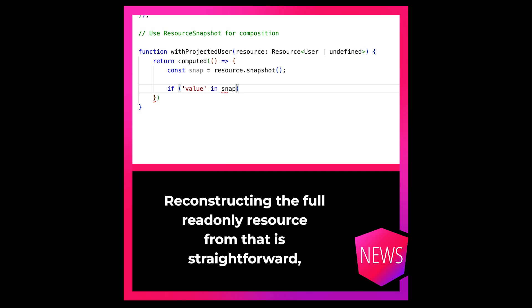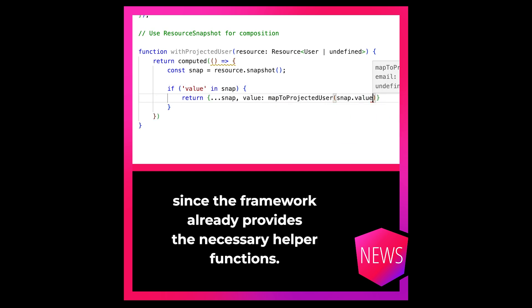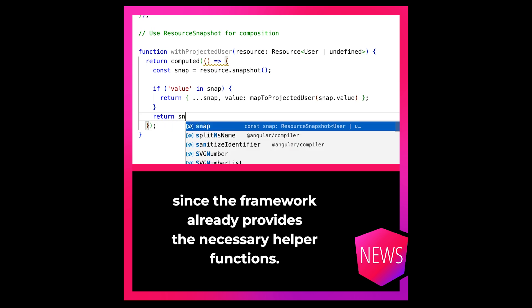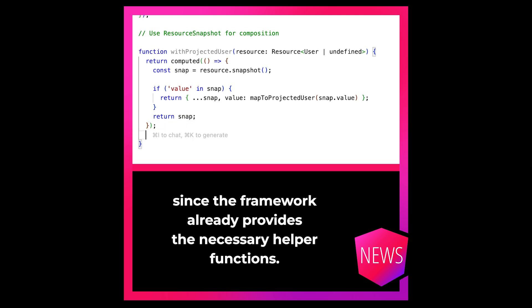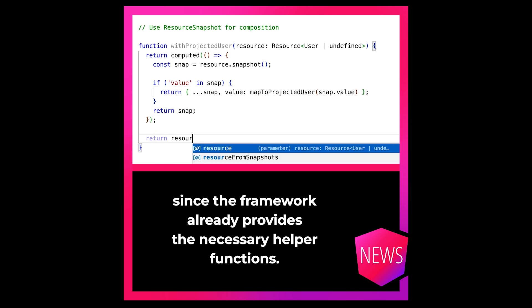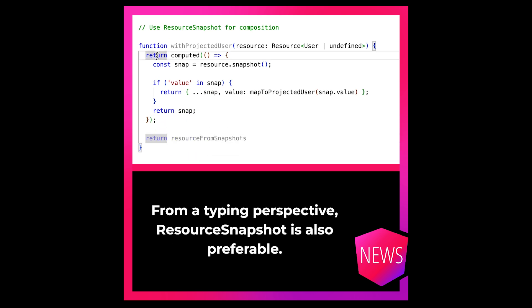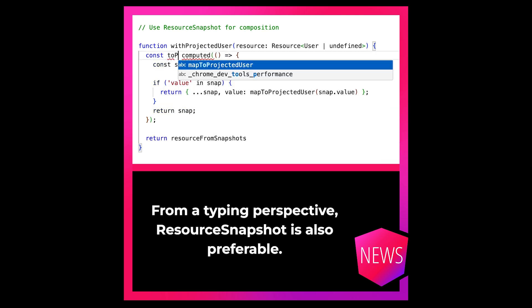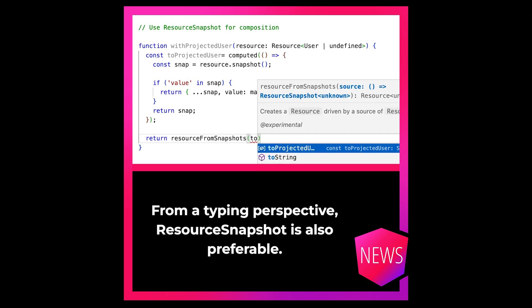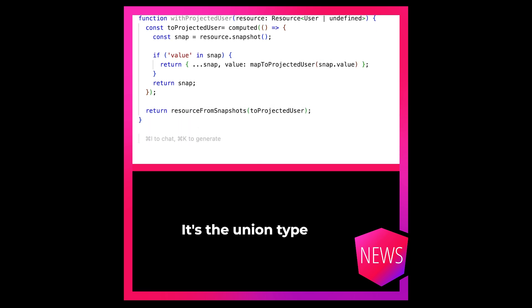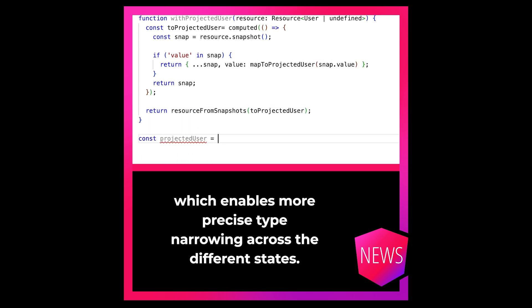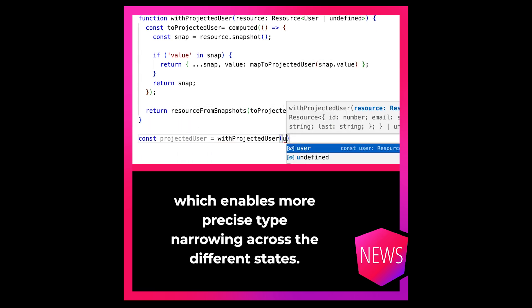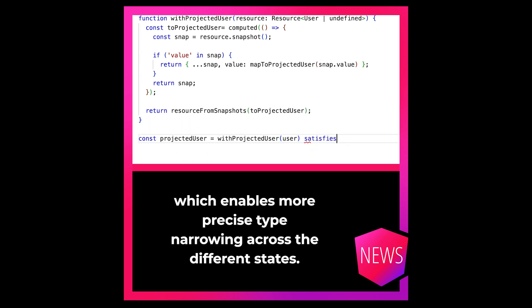Our mapping function can both take and return a snapshot. Reconstructing the full read-only resource from that is straightforward, since the framework already provides the necessary helper functions. From a typing perspective, Resource Snapshot is also preferable — it's a union type which enables more precise type narrowing across the different states.